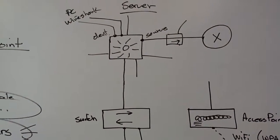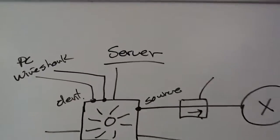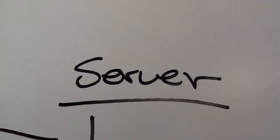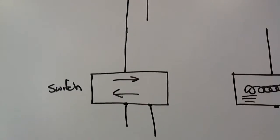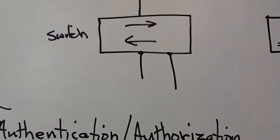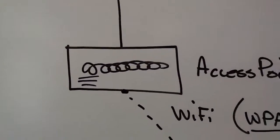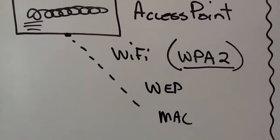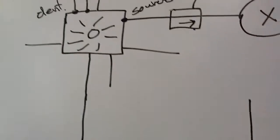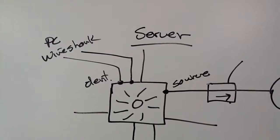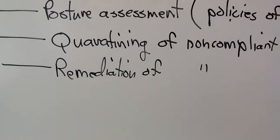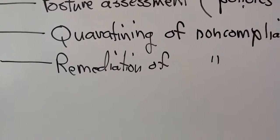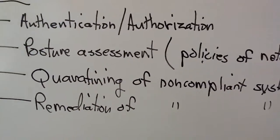That can look like this. You can have probably a radius server, but you can have a server that can be accessed from externally. Somebody accesses either through a switch or through an access point. The protocol gets you to the server, the server does the authentication, decides what to do with you if you're non-compliant, depending on your policies.